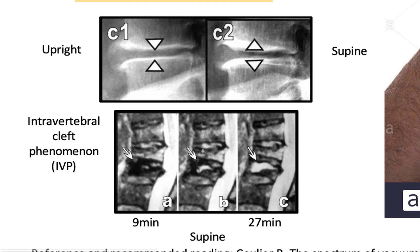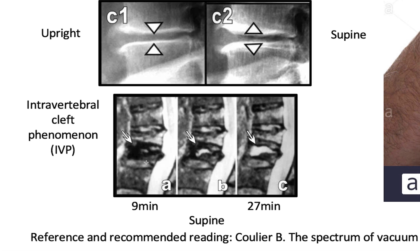The same phenomenon, or a similar phenomenon, occurs in the osteoporotic fracture. These are sequential images of the sagittal view of the spine taken in T2-weighted images, in which we see that an initial cleft or vacuum cleft is slowly being filled in with fluid as time progresses. This happens in this patient in the supine position. This is what we call the intravertebral cleft phenomenon.